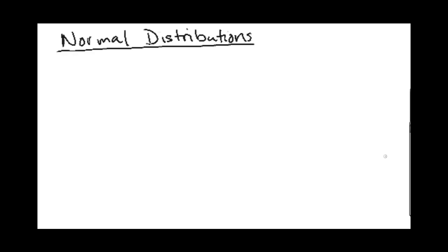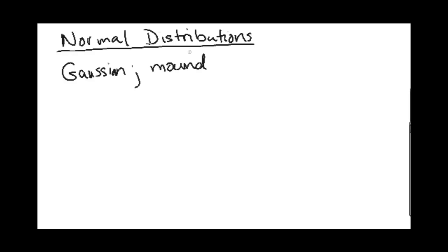Hello and welcome to another one of these ADD videos. Today we're going to be talking about normal distributions. They might also be referred to as Gaussian, or some people might say mound or normal distributions. These all are referring to the same type of pattern that you tend to see for all real-life data.